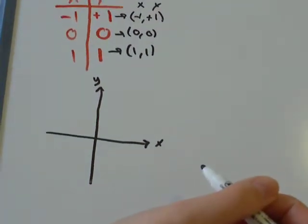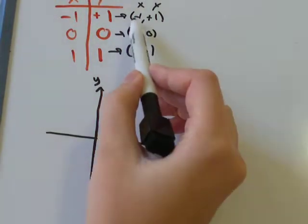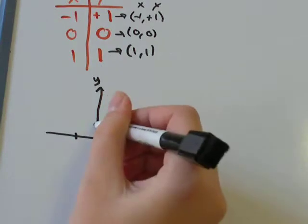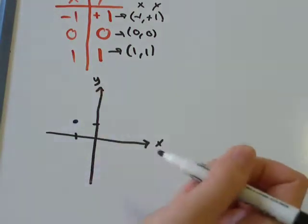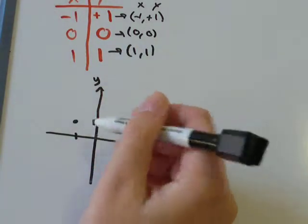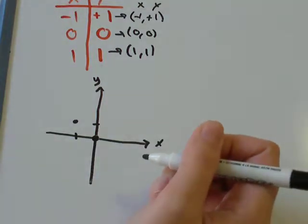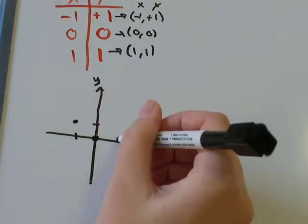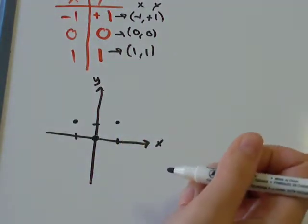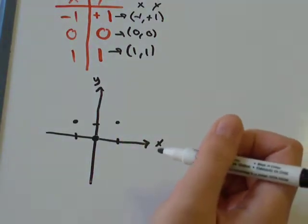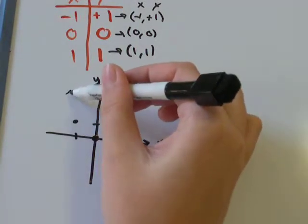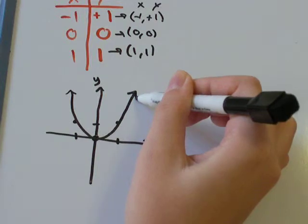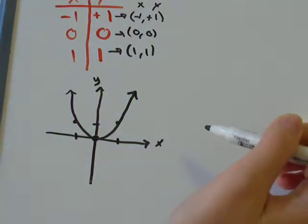So, let's drop those points on our grid. Negative one in the x-direction, somewhere over here. Positive one in the y. We get a point around there. We've got another point at zero, zero. That's called the origin, zero, zero. And positive one, positive one, positive one in the x-direction, positive one in the y-direction. And then, connect the dots in a nice, smooth curve. And you see, we've got a parabola.